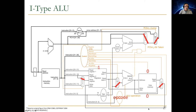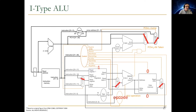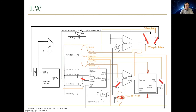I-type ALU is very similar to R-type, except the second ALU input is selected from the sign-extended immediate, the destination register ID comes from a different field, and the ALU control is determined by the opcode rather than the funct field of the instruction.